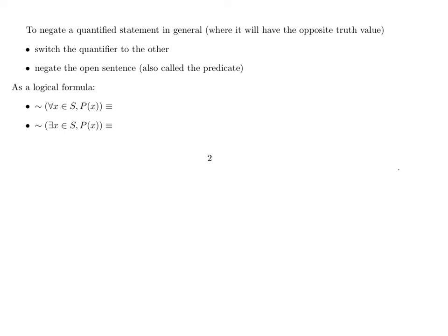The negation of a 'for all' statement: there exists an x in the same domain S such that not-P(x). The negation of an existential statement: for all x in the same domain S, not-P(x). That's how to negate any quantified statement with one quantifier and one variable.